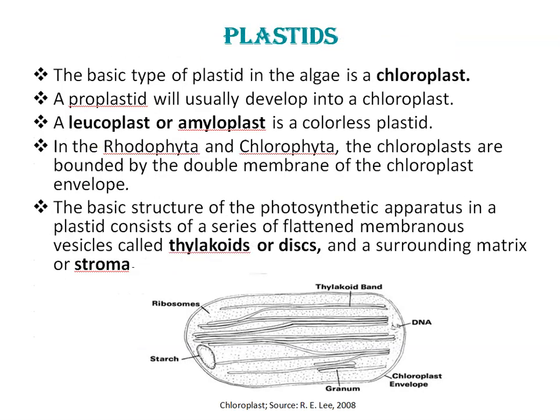Next is plastids. The basic type of plastid in the algae is the chloroplast, the plastid capable of photosynthesis. Proplastids will usually develop into the chloroplast, although in some heterotrophic algae it remains a proplastid. The leucoplast or amyloplast is a colorless plastid that has become adapted for the accumulation of storage products. In rhodophyta and chlorophyta, the chloroplasts are bounded by a double membrane of the chloroplast envelope. Just look at this diagram — this is the structure of a plastid. You can see the chloroplast envelope.